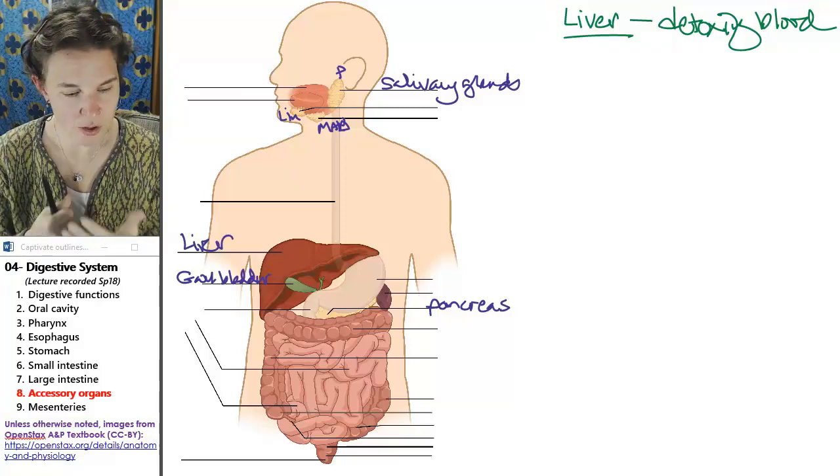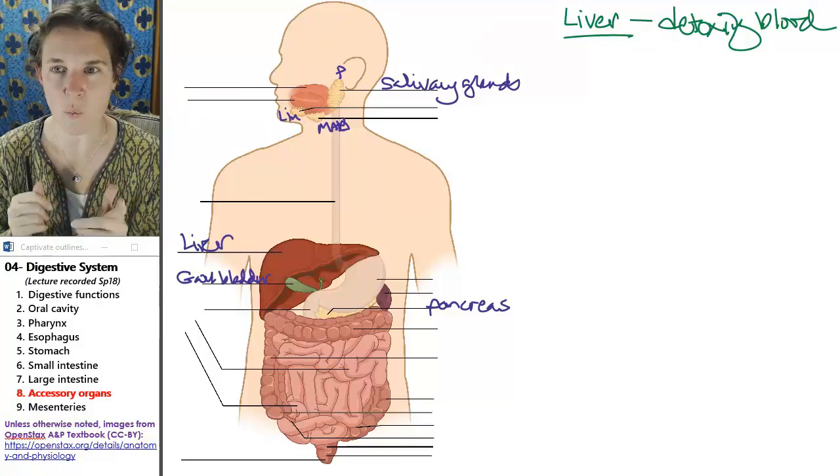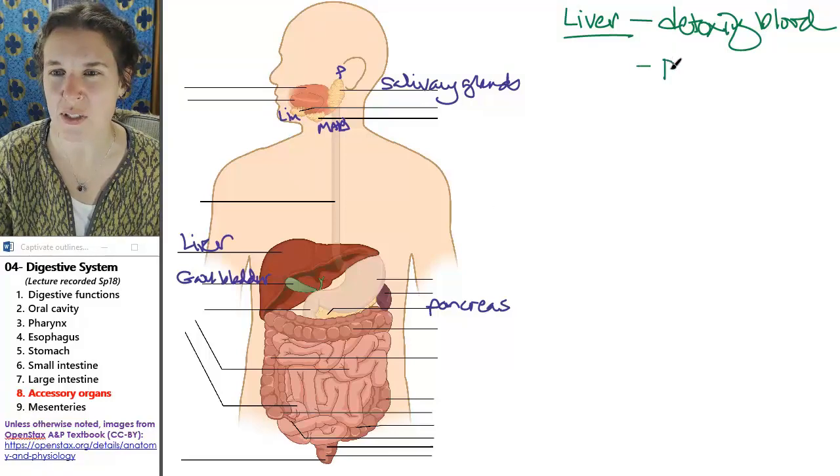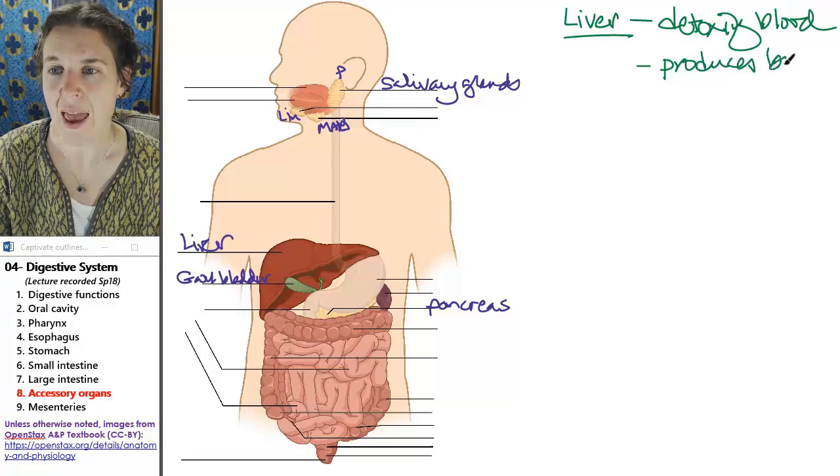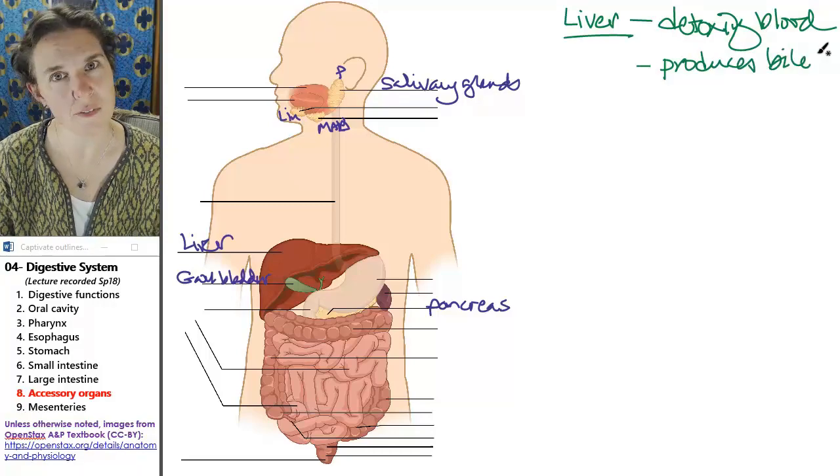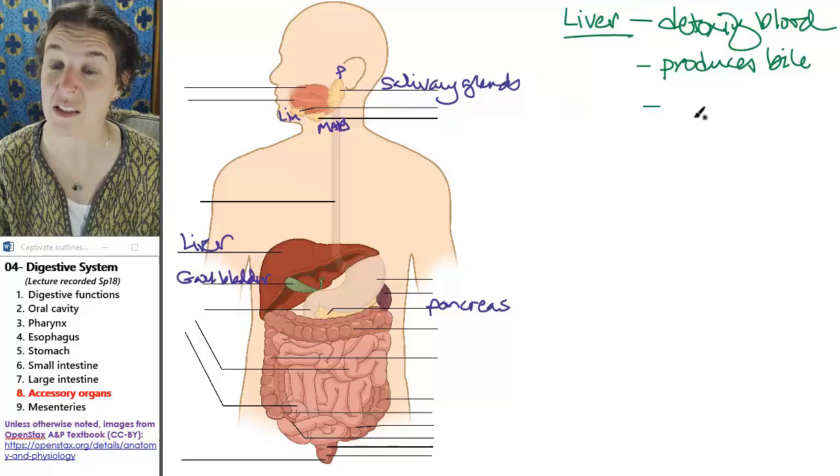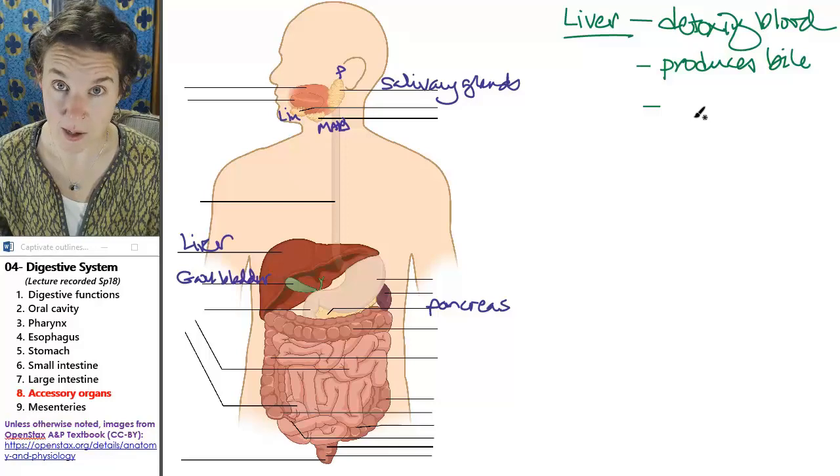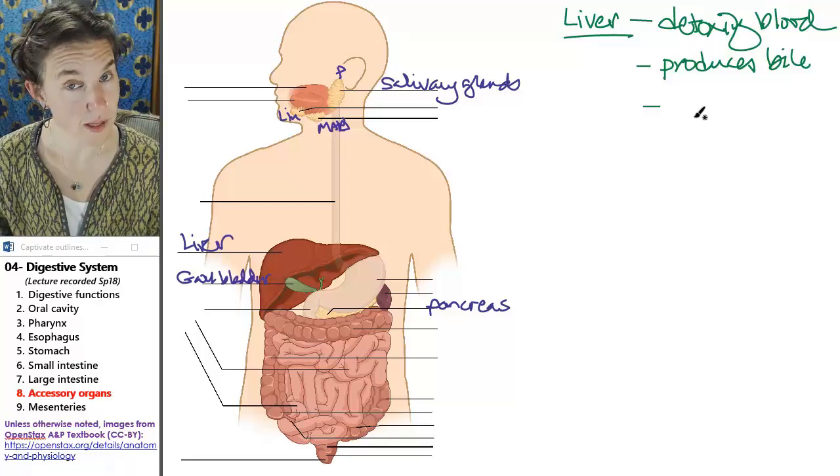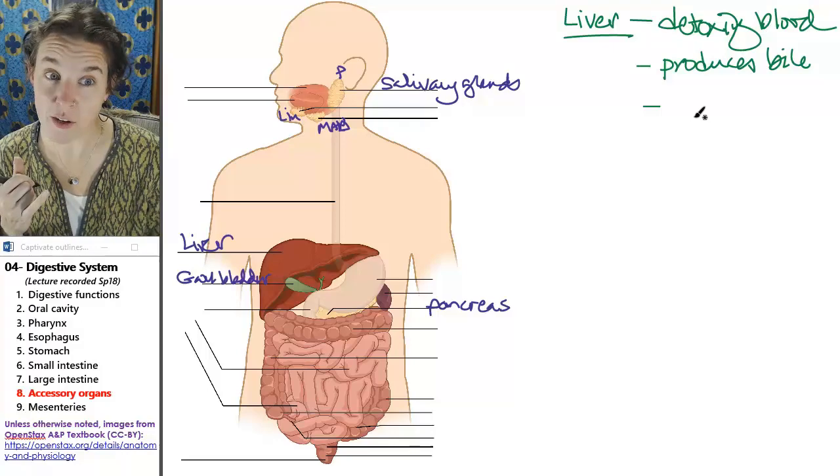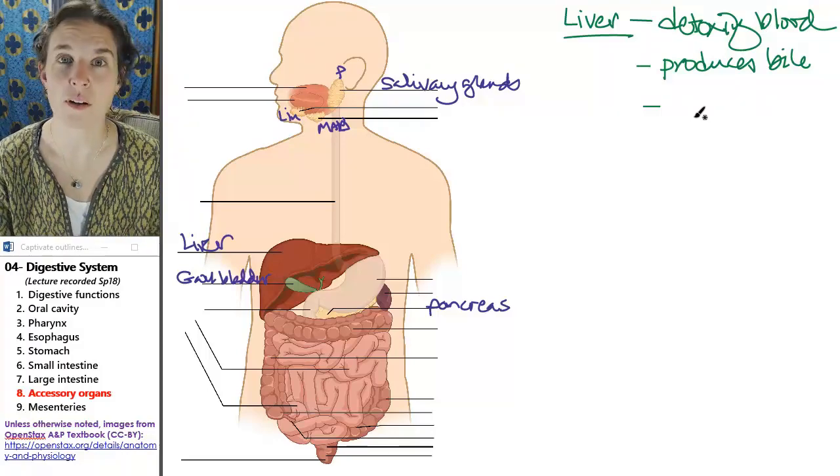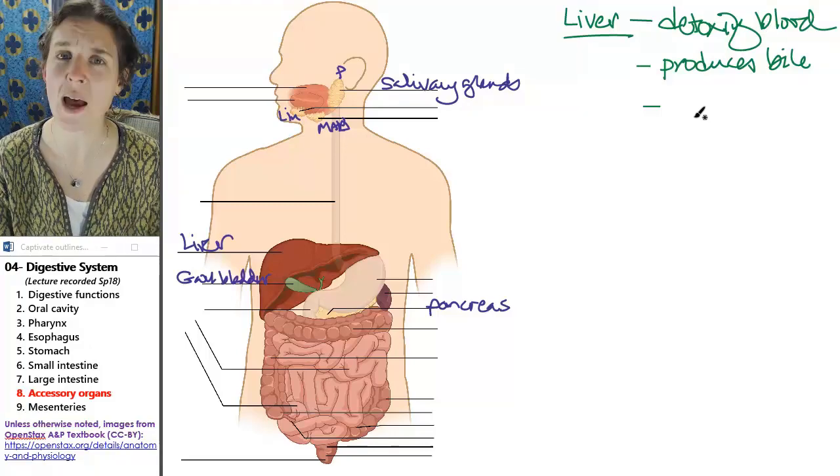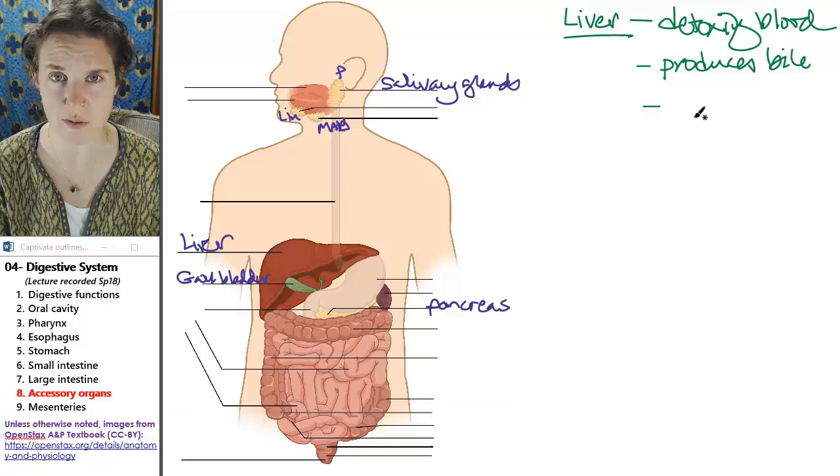But it's super interesting that every single thing that you absorb in the digestive tract goes through the liver. The liver has other functions. One of them related to the digestive system is that it also produces bile. And someday, if you're lucky, I'll tell you the Linus the pig story about bile and the five pound tub of butter.